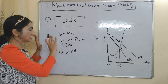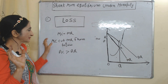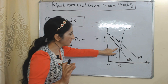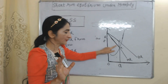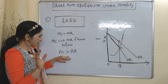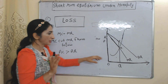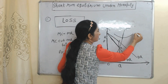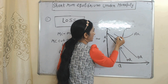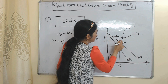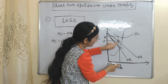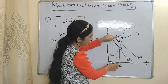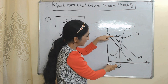Now we are going to talk about loss. Two conditions are the same as earlier: MC equal to MR and MC cuts MR from below — at point E both conditions are satisfied. The third condition of loss is that average cost is more than average revenue. AR is our average revenue curve and AC is our average cost curve. Here you can see TQ will be called our average revenue and KQ will be called average cost.